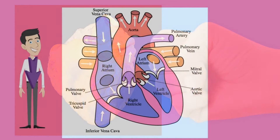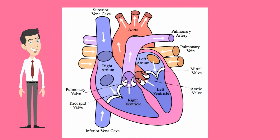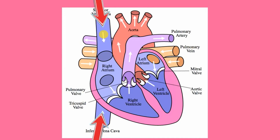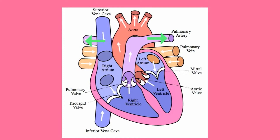Blood from the lower parts of the body enters the heart through the inferior vena cava, and from the head and upper parts of the body through the superior vena cava. These two large veins empty into the right atrium. The blood then passes through the tricuspid valve and into the muscular right ventricle. The right ventricle contracts and sends the blood through the pulmonary valve and into the pulmonary arteries, which lead to the lungs.